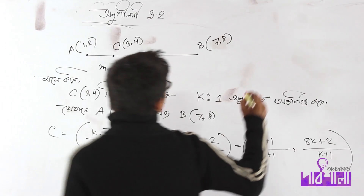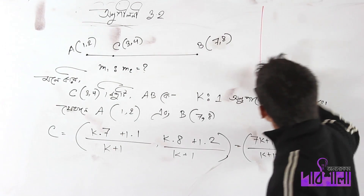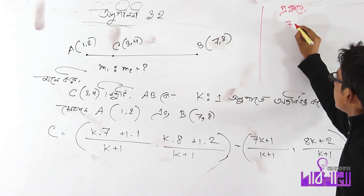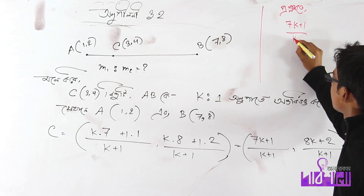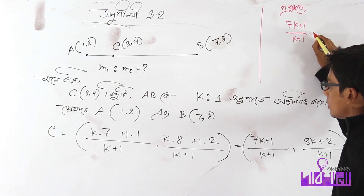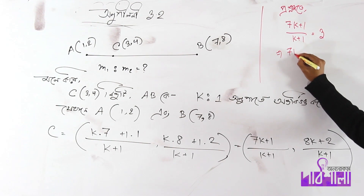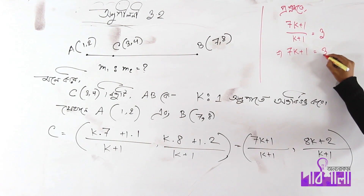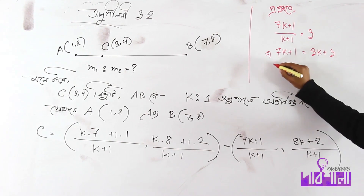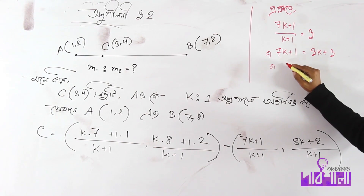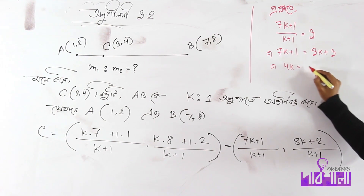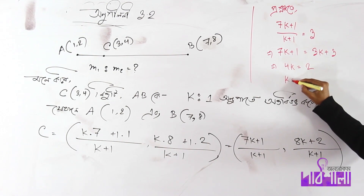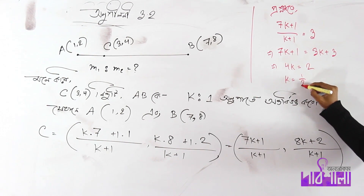What do we know about the problem? The problem is that 7k plus 1 divided by k plus 1 equals 2. Then 7k plus 1 equals 3k plus 3. Then 4k equals 2.